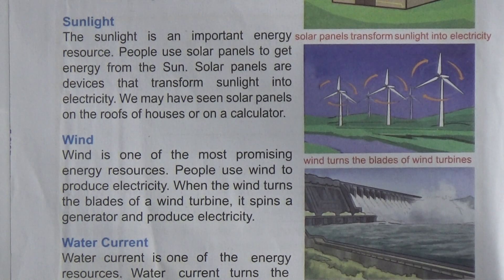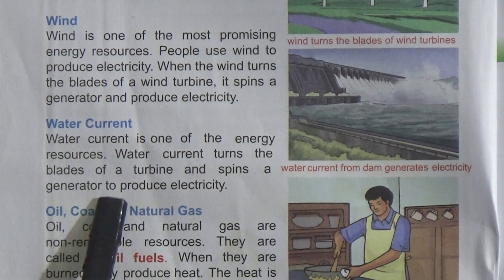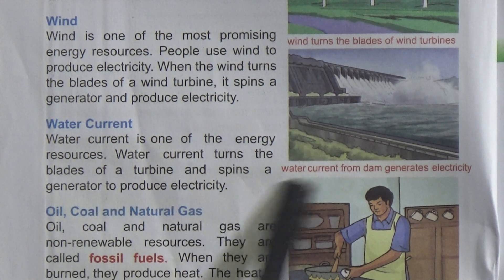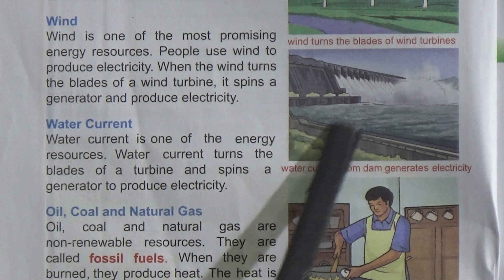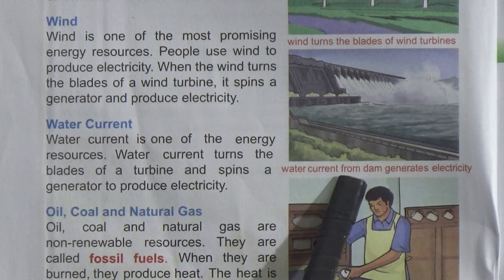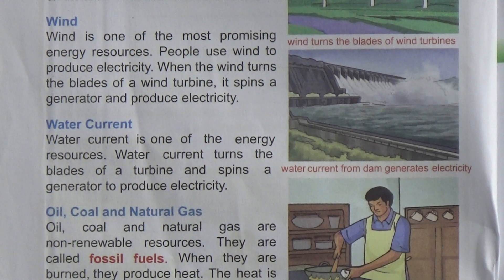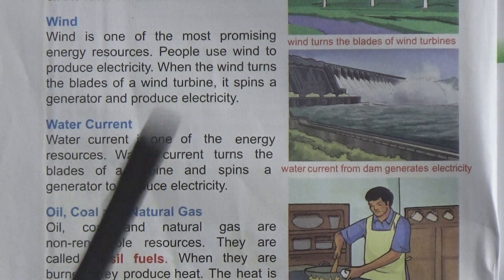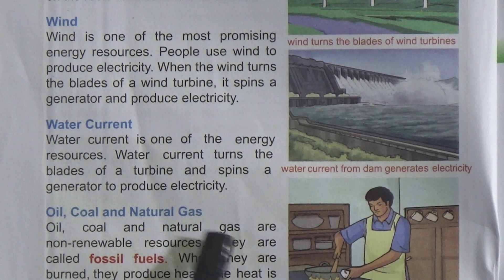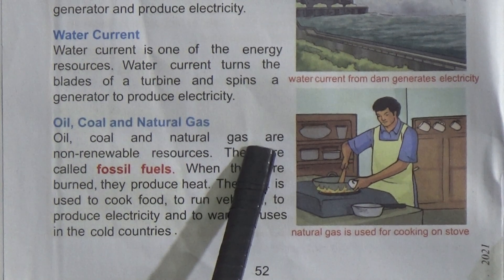Now look at here — water current. Water current is one of the energy resources. Water current turns the blades of a turbine and spins a generator to produce electricity. Here is the picture: water current from a dam generates electricity.